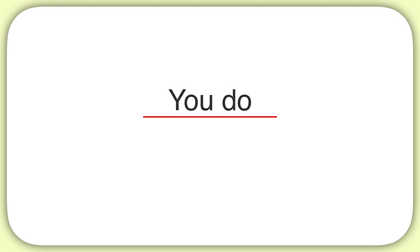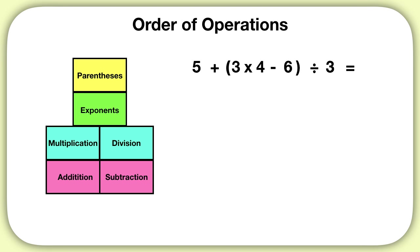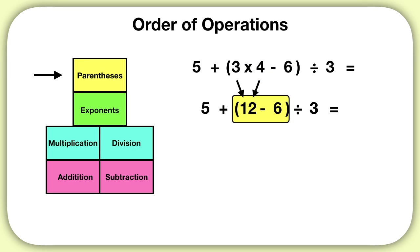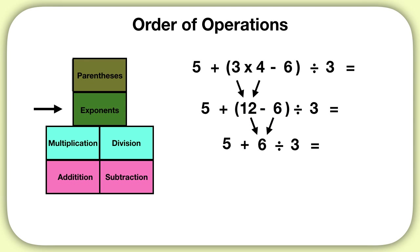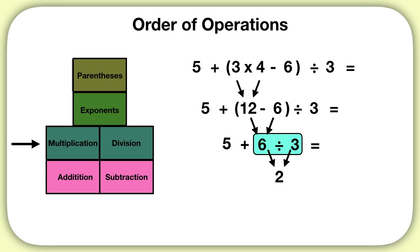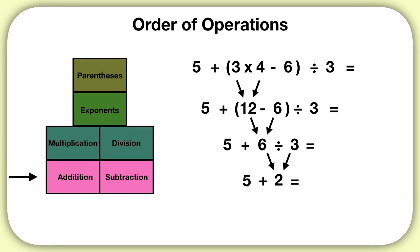Now it's time for you to practice on your own. What is the solution to this equation? First we solve parentheses. Inside of the parentheses, we'll do multiplication first — three times four is twelve. Then we still have our parentheses, so we'll solve twelve minus six to get six. Now there are no more parentheses. We check there are no exponents, so next is multiplication or division. We see division, and six divided by three is two. There's no more multiplication or division, so our last step is adding five plus two to get a final answer of seven.